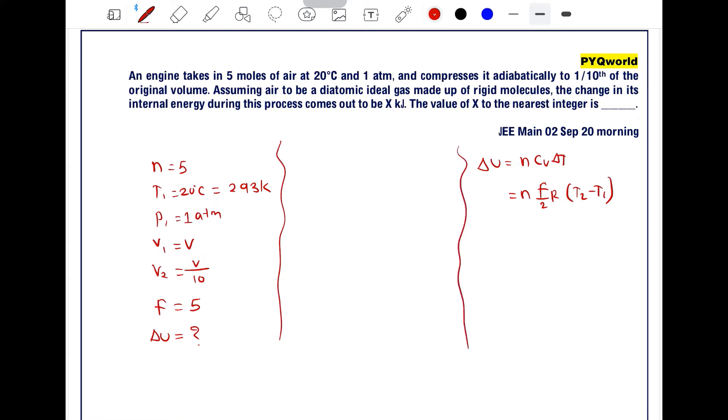The process is adiabatic. For an adiabatic process, we have a direct relation between temperature and volume: T V^(gamma-1) = constant. Therefore, T1 V1^(gamma-1) = T2 V2^(gamma-1).